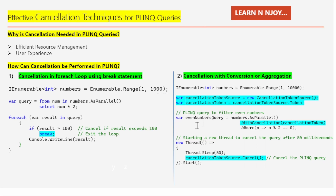Then I have written a PLINQ query to filter even numbers: `var evenNumbersQuery = numbers.AsParallel().WithCancellation(cancellationToken).Where(n => n % 2 == 0)`. The `AsParallel` method is used to parallelize the query, enabling it to execute concurrently across multiple threads. The `WithCancellation` method specifies the cancellation token to be used for cancelling the query. The `Where` method filters even numbers based on the predicate `n % 2 == 0`.